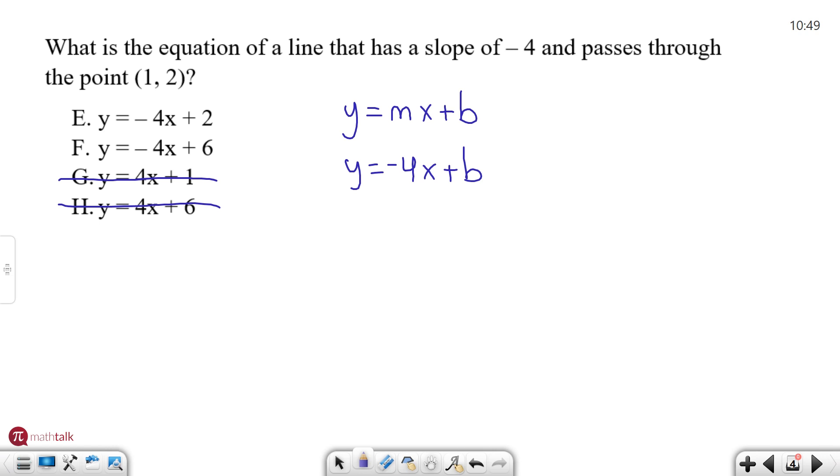Now we're also given a point (1, 2) and any coordinate point is in the format of x comma y. So all I need to do is plug in the x and y values. So 2 is y, -4 times 1 is x and plus b. Now I just need to figure out what b is and I can find my final answer to my equation. So 2 = -4 + b. I just need to do one more step. I need to add 4 to both sides and then I get 6 = b.